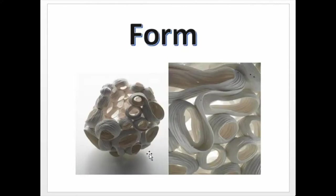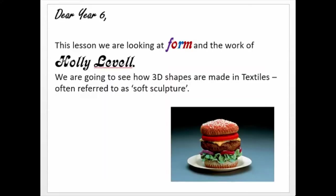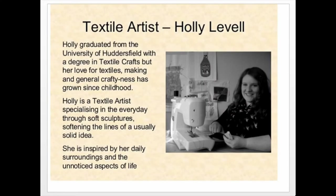This is the kind of form you might create if you were doing some kind of textile sculpture — you can see these lovely forms here. We're going to do two things: learn about form and look at a textiles artist, Holly Lavelle, who created 3D shapes in textiles — often called soft sculpture. For example, this hamburger here isn't made out of food; it's made out of fabric, ribbon, beads, and that kind of thing.